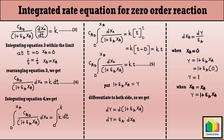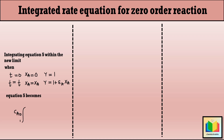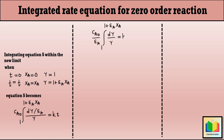Now we integrate equation 5 within the new limits. We substitute dY/epsilon_A in place of dX_A and Y in place of (1 plus epsilon_A X_A). When T equals 0, X_A equals 0 and hence Y equals 1; when T equals T, X_A equals X_A and hence Y equals 1 plus epsilon_A X_A. Therefore equation 5 becomes: C_A0 times integration from 1 to (1 plus epsilon_A X_A) of (dY/epsilon_A) divided by Y, equals K into T. After rearranging: C_A0 divided by epsilon_A, times integration from 1 to (1 plus epsilon_A X_A) of dY divided by Y, equals K into T.